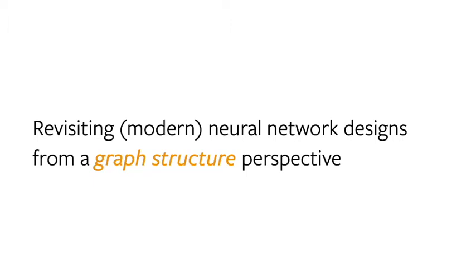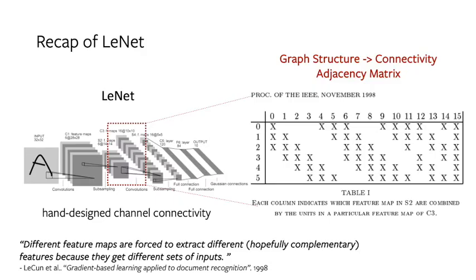We'll start by revisiting some modern neural network designs from a graph structure perspective. The first one is the original LeNet. This is perhaps a small detail that is not mentioned or remembered anymore: the connections between the S2 and C3 layers are actually not fully connected. In LeNet, a handcrafted connectivity pattern was used, as we can see in the adjacency matrix on the right. The motivation was that different feature maps are forced to extract different, hopefully complementary, features because they get different sets of inputs. However, there's no experimental justification whether this pattern can really help performance.